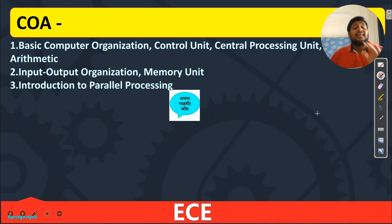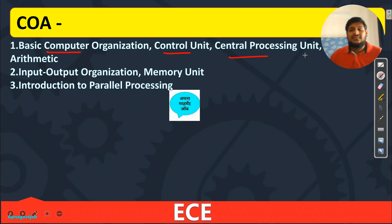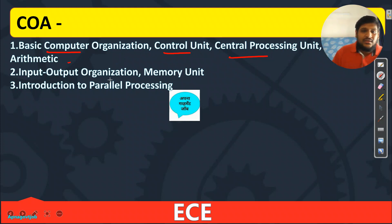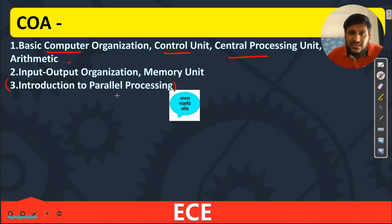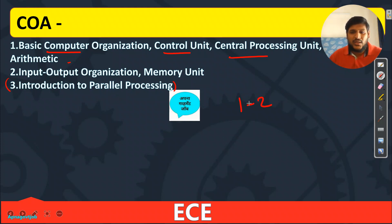COA syllabus: Basic Computer Organization, Control Unit, CPU, Computer Arithmetic, 8085. Also Input/Output, Memory Unit, and Introduction to Parallel Processing. This is the syllabus you have for your NILATE exam from COA, and from this topic maximum they can ask you one to two questions.